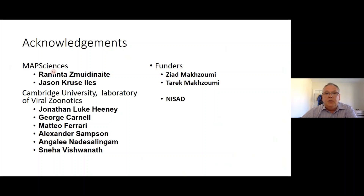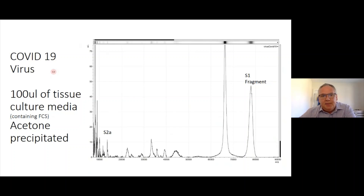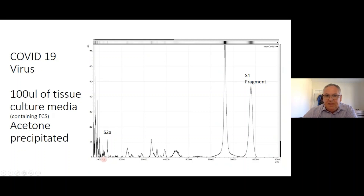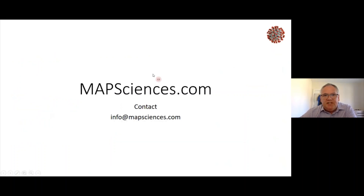I'd like to acknowledge everyone who worked 24/7 for weeks to get this up and running — from my lab, my eldest son Jason, Professor Jonathan Healy and Dr. George Carnell from Cambridge University's Laboratory of Viral Zoonotics. This has all been funded internally; I'd particularly like to thank my business partners Zeef and Tarak Mapazumi at Map Sciences, who believed we could make a difference and made £250,000 available to get another mass spec and get the work done. Here is COVID-19 virus — the Wuhan isolate — just 100 microlitres of tissue culture media, acetone precipitated using our optimised disruption buffer, showing the S1 fragment, S2A fragment, and a lovely fingerprint in the lower mass region. You can contact us at info@mapsciences.com.